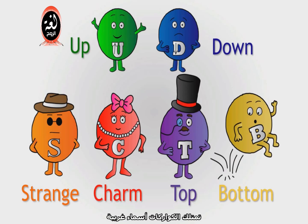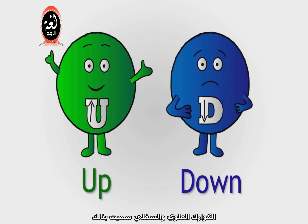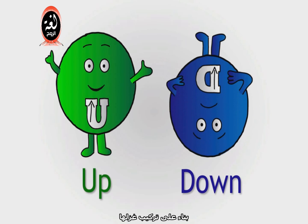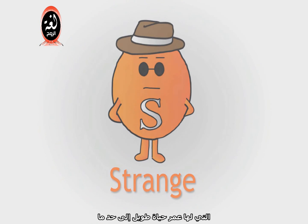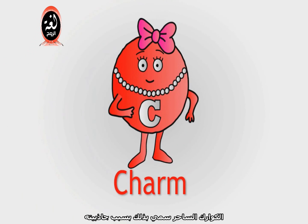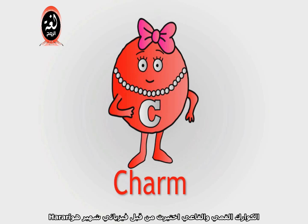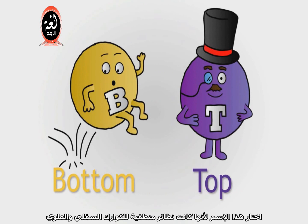Quarks have quite strange names. Up and Down were named based on components of their spin. Strange Quarks were given their name because they were observed in particle decays that had slightly longer lifetimes than expected. The Charm Quark was named for the fascination it inspired in physicists. Bottom and Top Quarks were named by physicist Harari because they were the logical counterparts of the Up and Down Quarks.